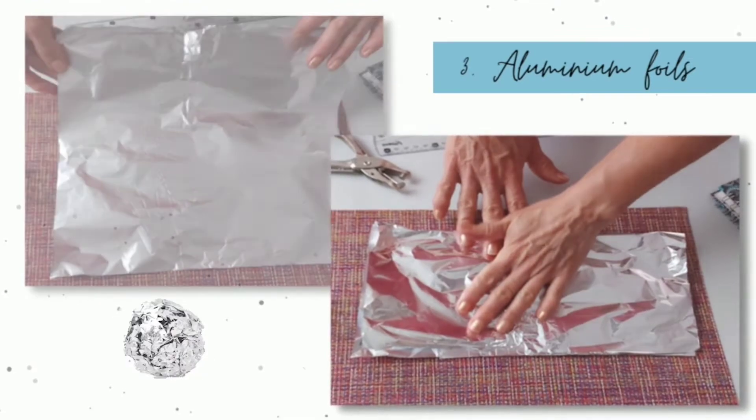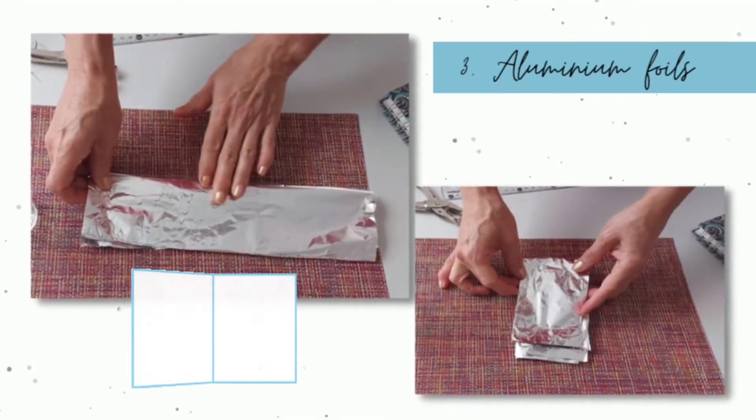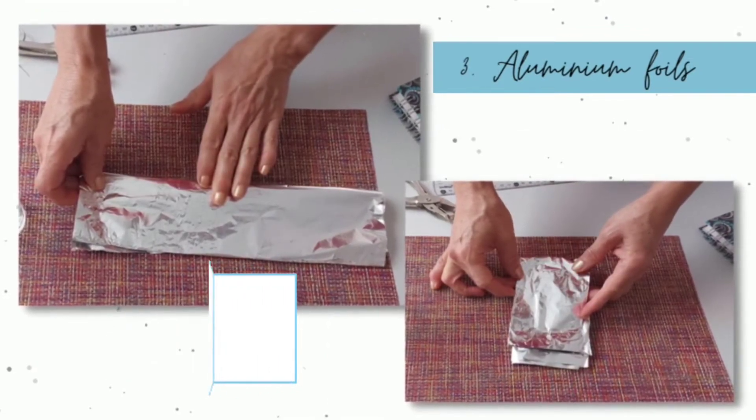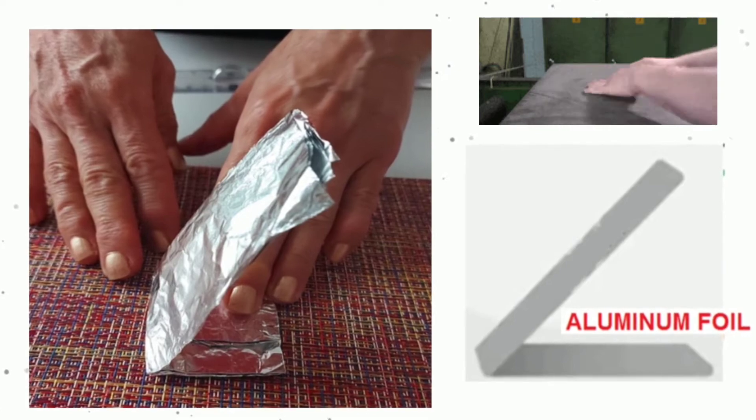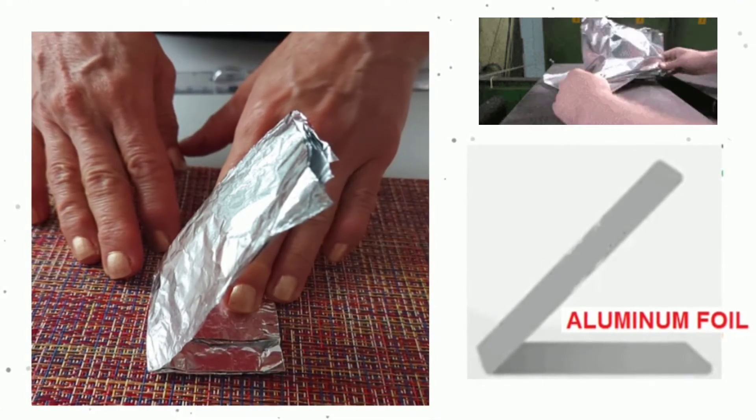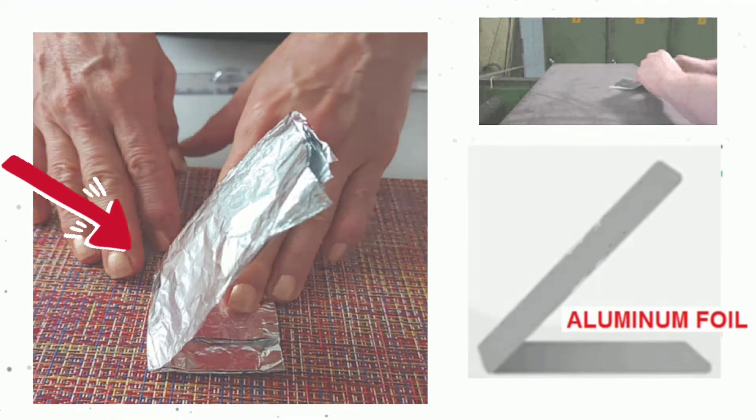To continue, take some aluminum foil and then you are going to fold it in a rectangular shape as you can see here. Now, when you have folded it enough to be sturdy, make with it a similar structure as you can see here.